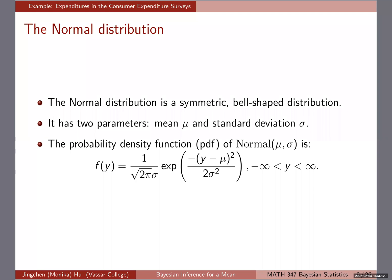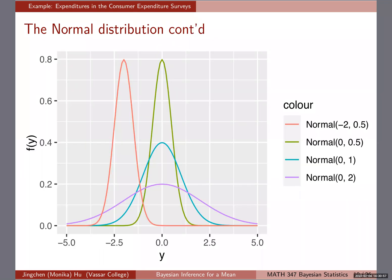This is a very commonly used data model for numerical data in particular. Normal distribution is symmetric and bell-shaped. It has two parameters: μ and σ. μ is the mean and σ is the standard deviation. The probability density function we've seen in the review lecture and in the homework question.